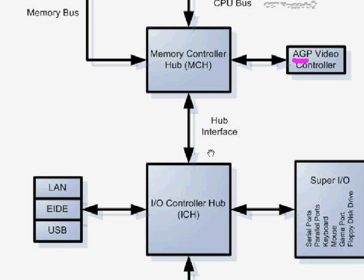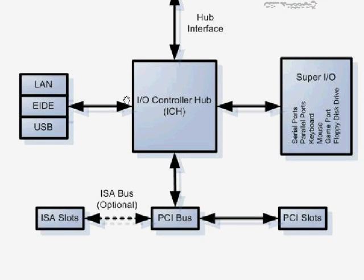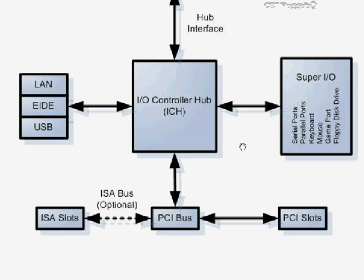We also have the Hub Interface, which communicates down to what used to be the South Bridge. A key characteristic of this architecture is that the PCI bus has now been moved down here. In the North-South Bridge architecture the PCI bus was between the North and South Bridge — a potential choke point. Now it's no longer there; it has its own direct connection to the I/O Controller Hub. Other devices like local area network connection, enhanced IDE, and USB all connect separately to the ICH, which is more efficient and gives a faster data pathway.